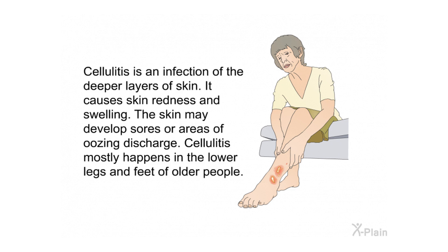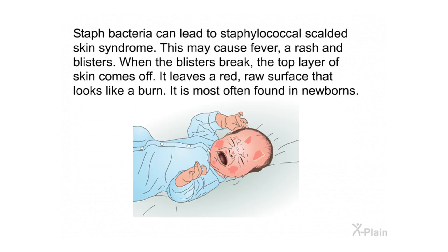The skin may develop sores or areas of oozing discharge. Cellulitis mostly happens in the lower legs and feet of older people. Staph bacteria can lead to staphylococcal scalded skin syndrome, which may cause fever, a rash, and blisters. When the blisters break, the top layer of skin comes off, leaving a red raw surface that looks like a burn. It is most often found in newborns.